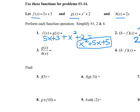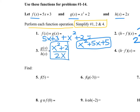Number three. The directions say perform each function operation and then simplify just problems 1, 2, and 4. So for number three, I don't have to simplify. I'm going to take g of x and divide that by h of x, and that is it. Don't do anything else — well, one more thing: tell me what x can't be. If I plug in and get 0 in the denominator, that means x cannot be 0.